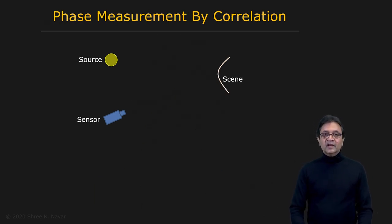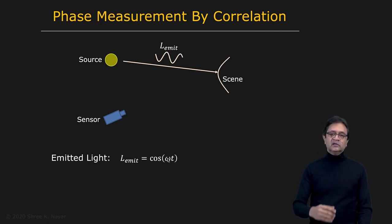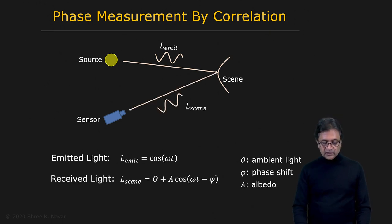How do we measure this phase difference between the emitted light and the received light? For this, we're going to use a method that we've used before, which is correlation. Here's the idea: the emitted light can be written as cos(ωt), where ω refers to the frequency of the modulation of this wave, the brightness modulation. The received light is going to be O + A·cos(ωt - ψ), where it's attenuated by the scene itself, ψ is the phase shift that we want to measure.